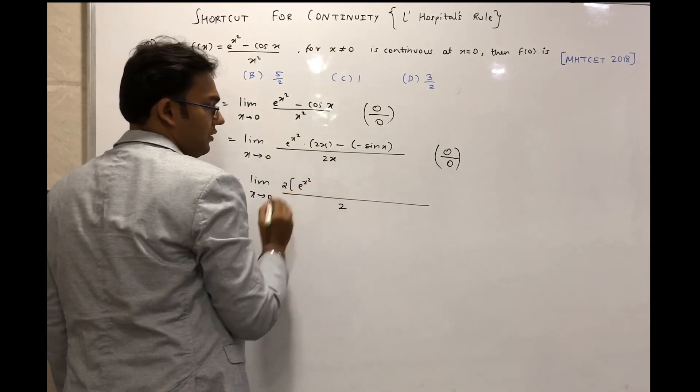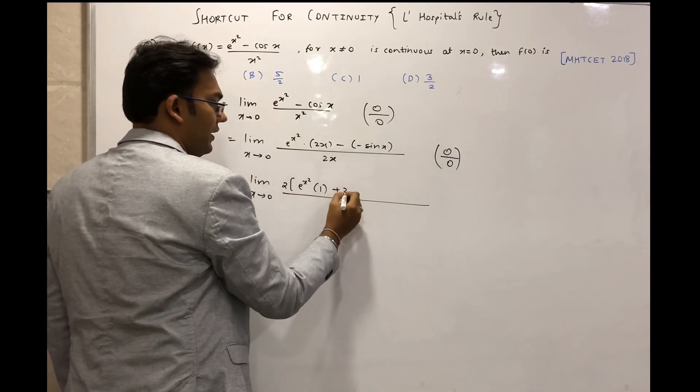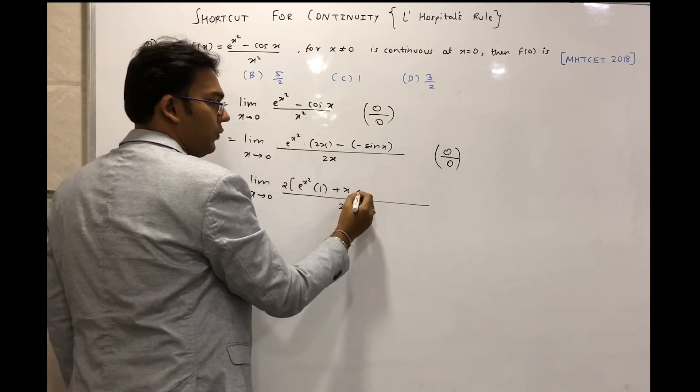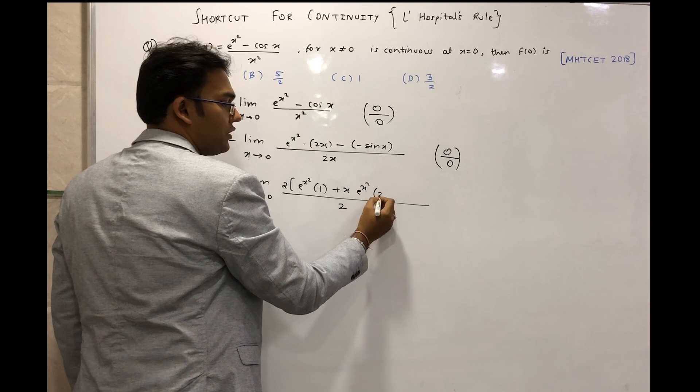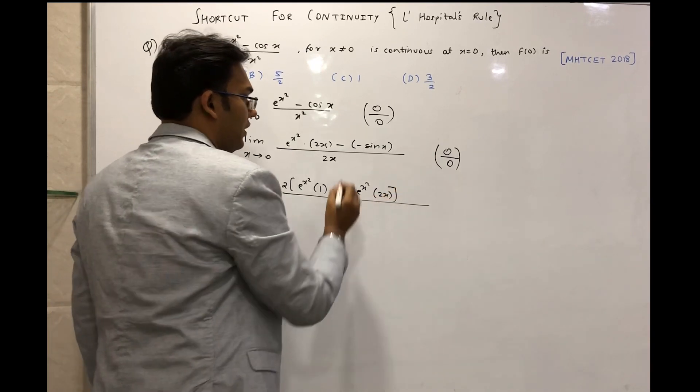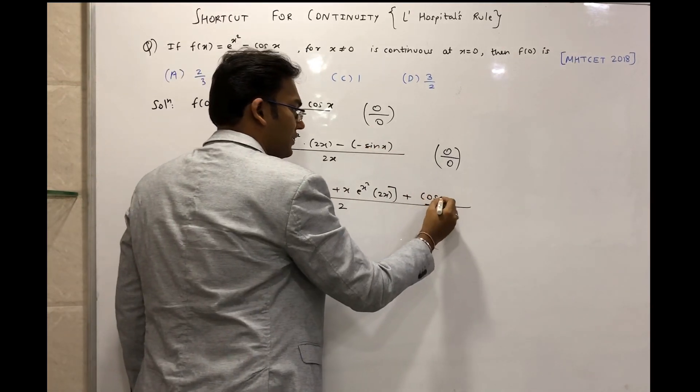2x times e^(x²) derivative: 2x as it is times derivative of e^(x²) which is e^(x²) times 2x, plus e^(x²) times derivative of 2x which is 2, minus minus plus derivative of sin x is cos x.